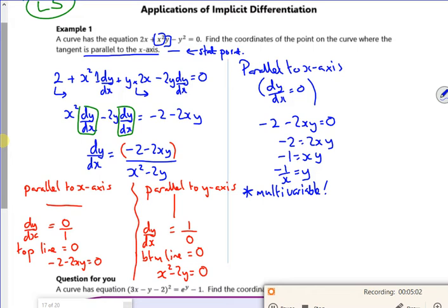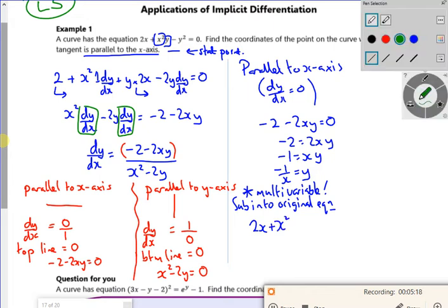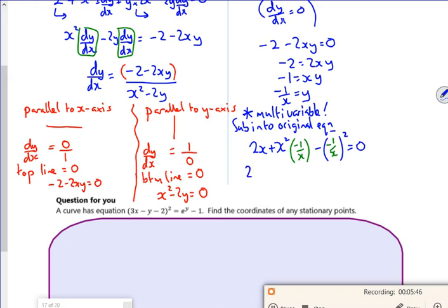So what I need to do now is sub back into the original equation. So I've got 2x plus x squared multiplied by y, which is now multiplied by minus 1 over x. Then I've got minus y squared is equal to 0. So what do I do if I tidy this up? I've got 2x, that's going to give me minus x, that's going to be minus 1 over x squared equals 0. So I've got x minus 1 over x squared equals 0.